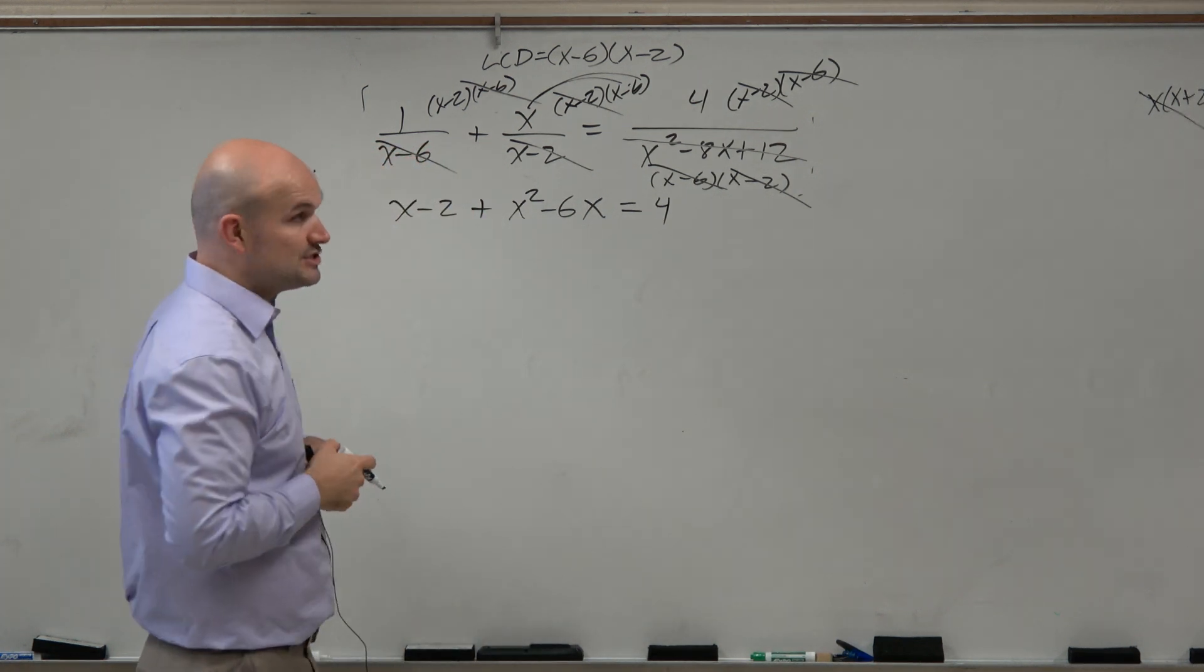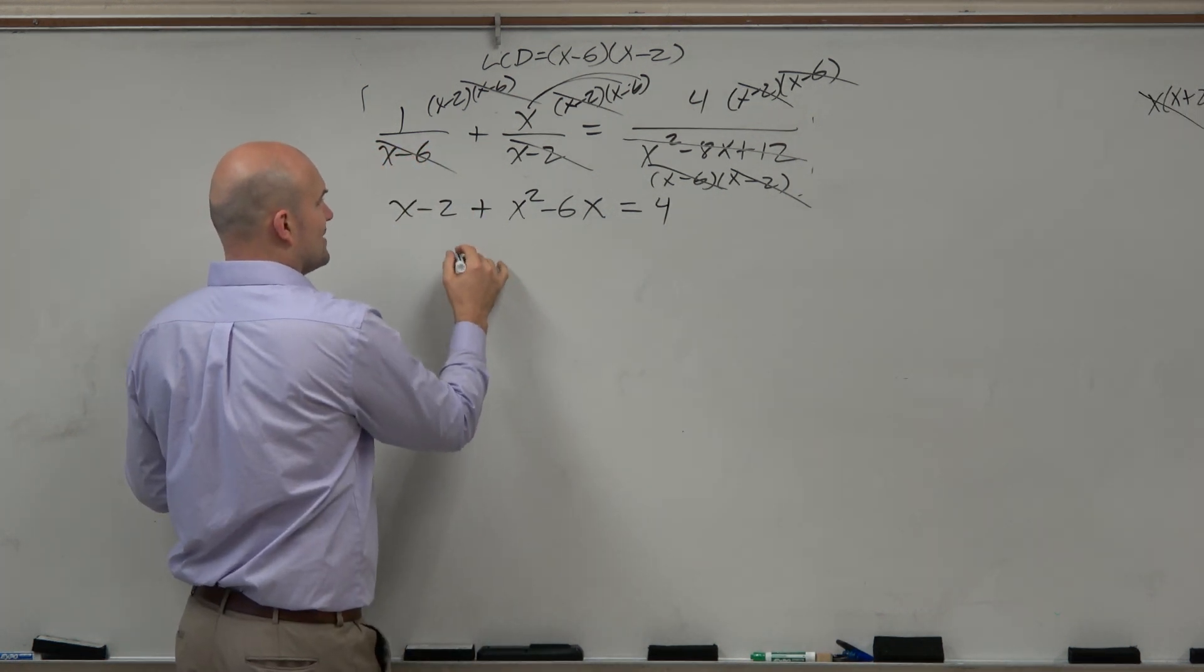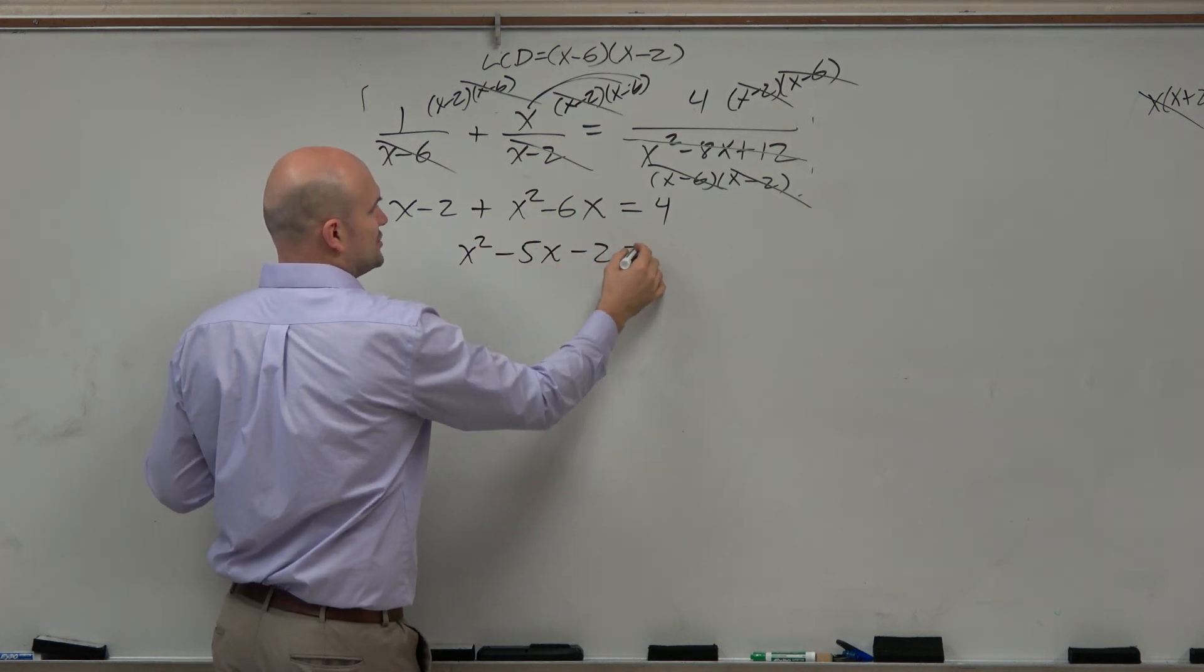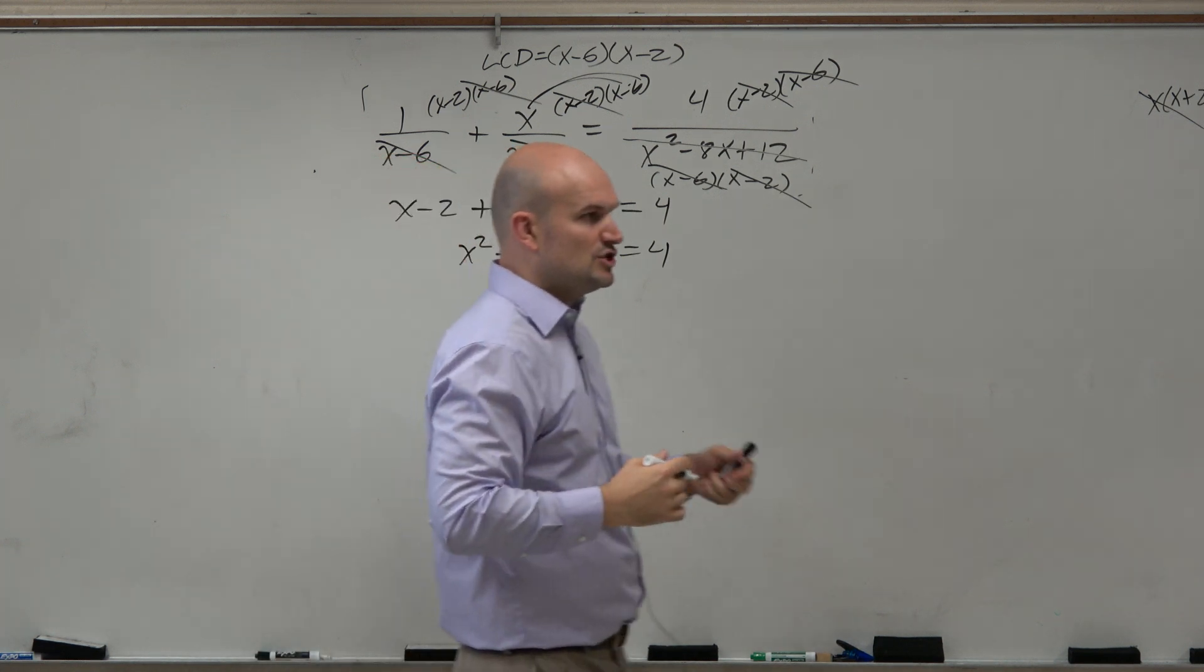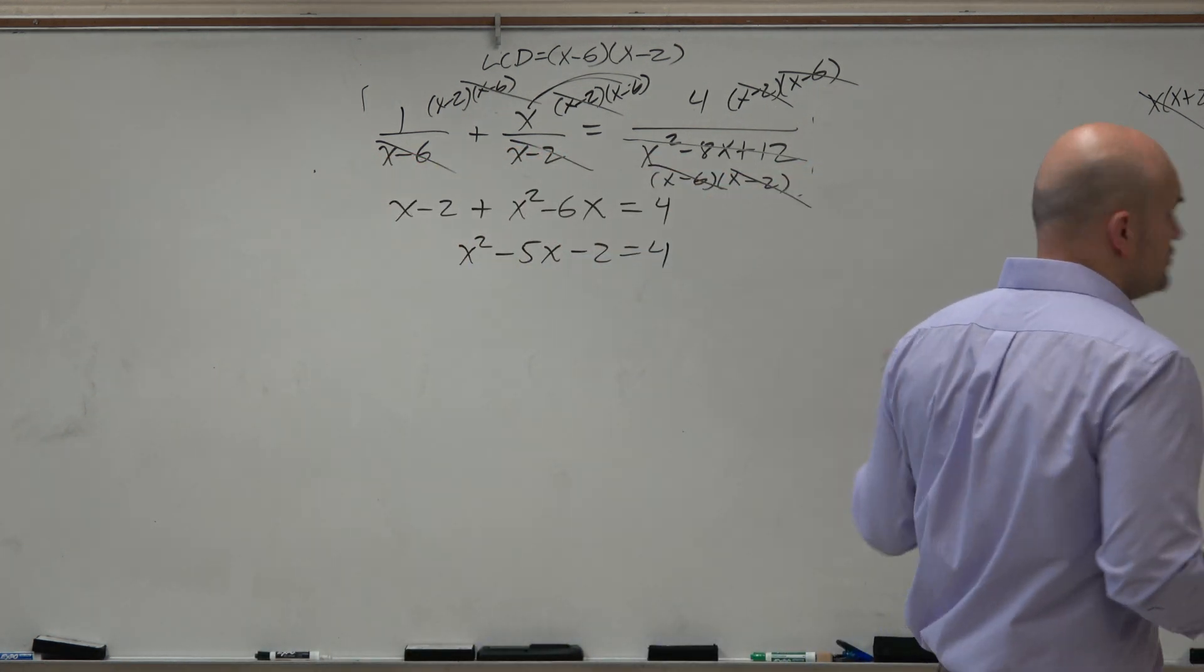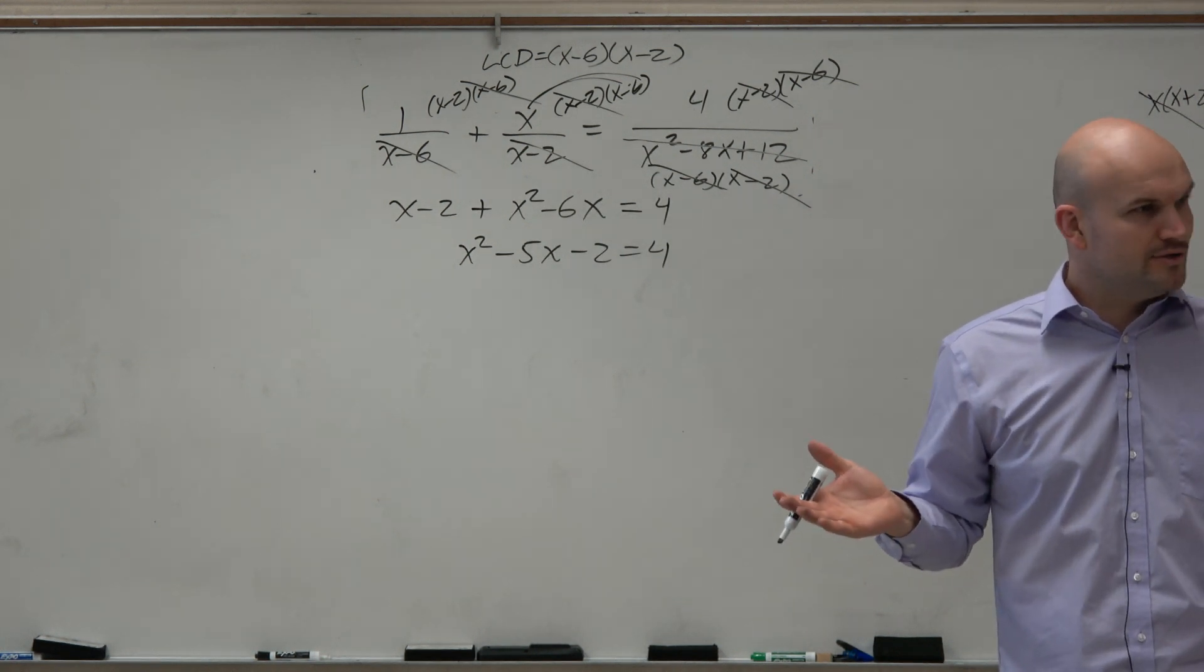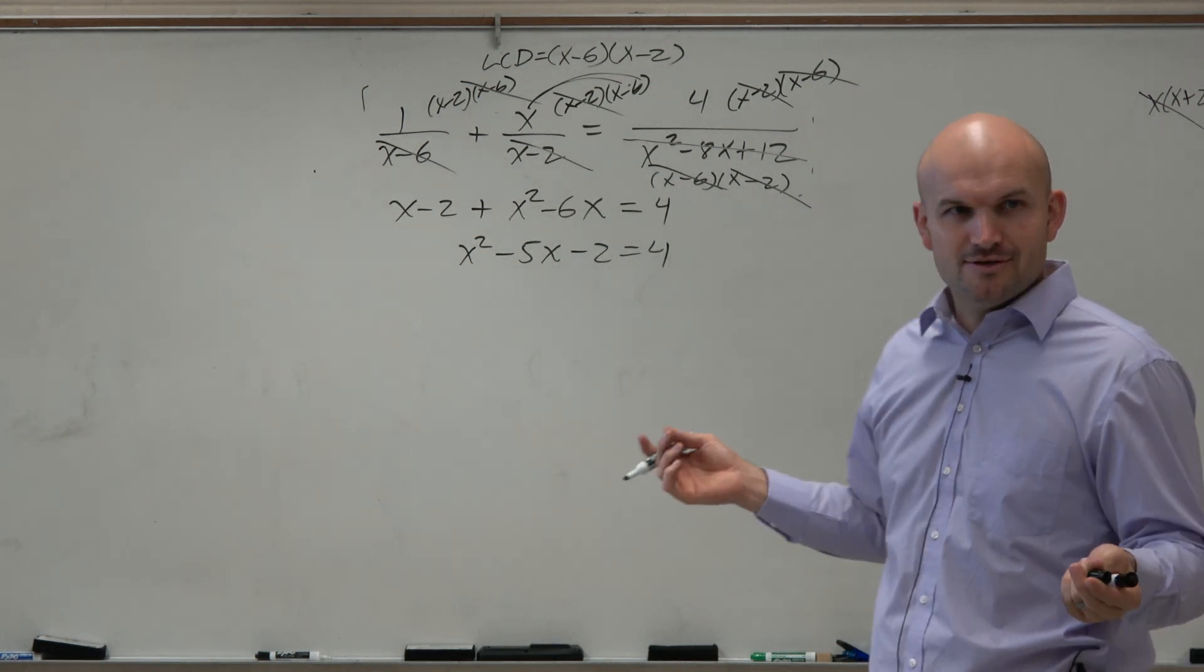Now I can combine like terms, right? So let's rearrange this: x squared minus 5x minus 2 equals 4. So what should I do? Should I add the 2 to the other side and then take the square root? Why not? That's what I've been doing for the other ones. Why can't I do that?